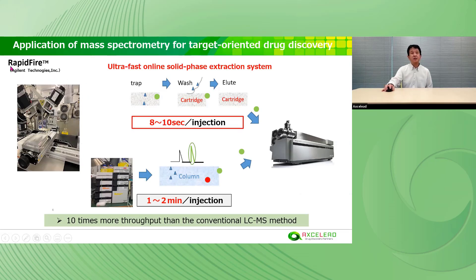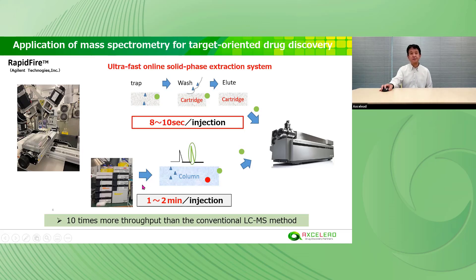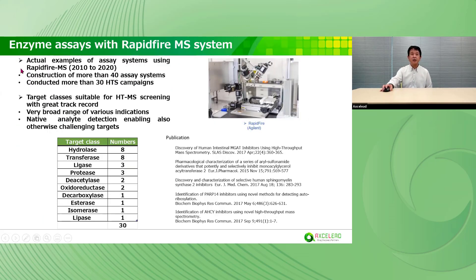For high-throughput analysis, we introduce RapidFire. RapidFire is an ultra-fast online solid-phase extraction system. We can measure a sample within 10 seconds, and we can obtain 10 times more throughput than the conventional LC-MS method. Using RapidFire-MS from 2010 to 2020, we constructed a multiplex assay system and conducted more than 30 HTS campaigns.